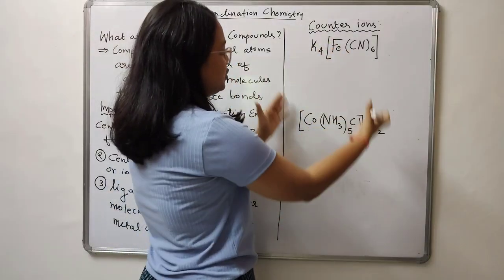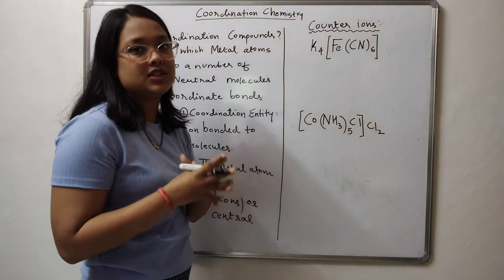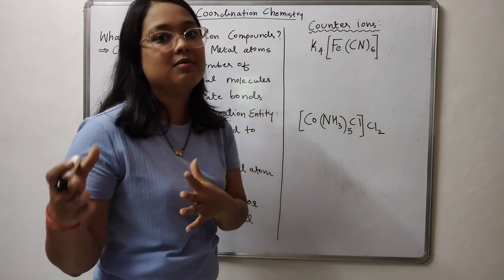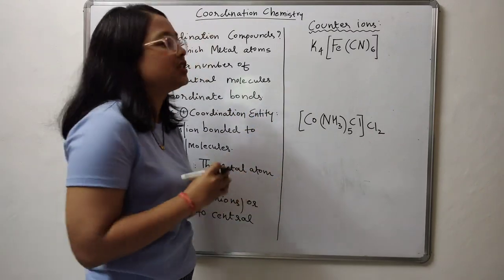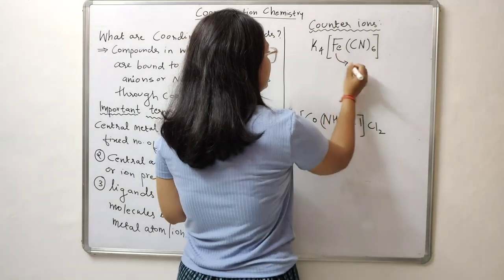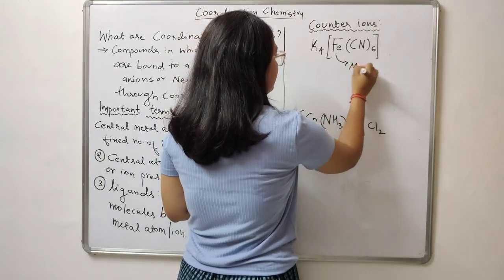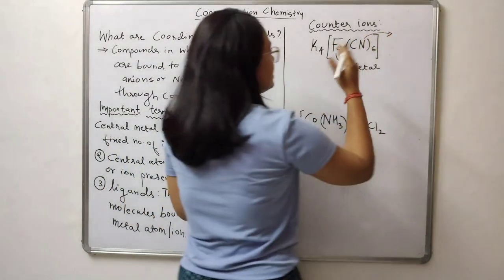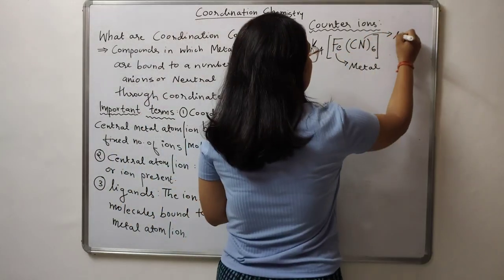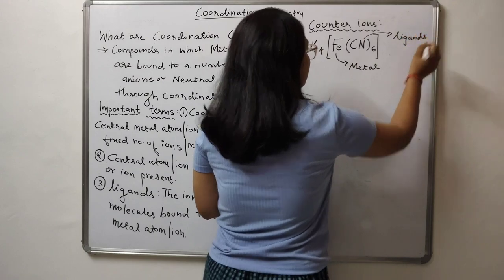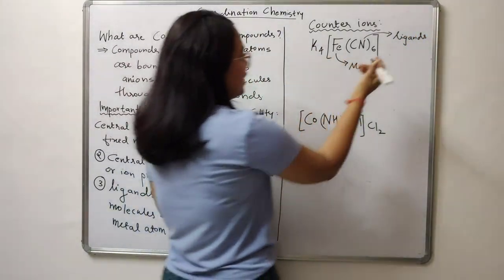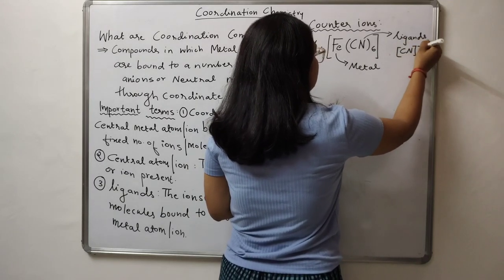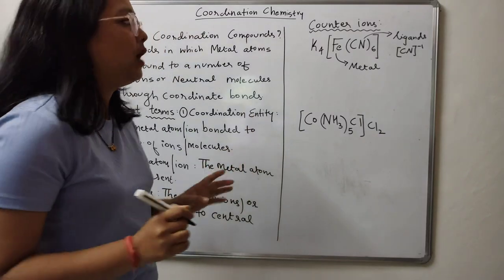These two are examples of coordination compounds. We have learned how to identify different fragments or sections of a coordination compound. In the first example, the central metal atom is iron, and cyanide represents the ligands. Cyanide is negatively charged, carrying a charge of minus 1.